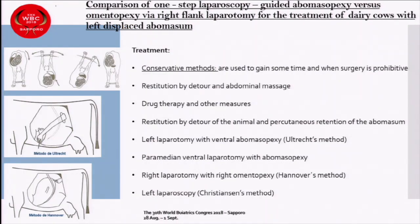To treat this pathology we have several methods. Conservative methods are used to gain time when surgery is prohibitive, including restitution by rolling and abdominal massage, drug therapy, and other measures. Surgical options include percutaneous rotation of the abomasum, left laparotomy via ventral abomasopexy (Utrecht's method), paramedian-ventral laparotomy with abomasopexy, right laparotomy via omentopexy, and left laparoscopy by the Christensen-Sermet method.